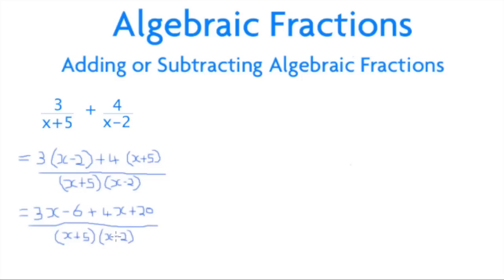When we work out our top expression to simplify the equation, we see that 3x plus 4x gives 7x. For our whole numbers, -6 + 20 gives us 14. So, written in full, we get (7x + 14) over (x+5)(x-2).